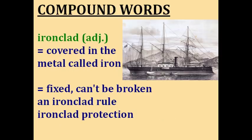Ironclad. Ironclad literally means to be covered in the metal called iron — for example, a battleship, which provides protection. But the word ironclad is often used metaphorically. An ironclad rule or ironclad protection means something that is fixed and cannot be broken. An ironclad rule is one you can't break, and ironclad protection is protection that cannot be penetrated.